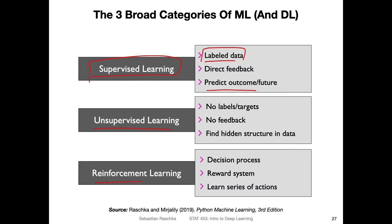Supervised learning also involves direct feedback. We can say whether our prediction was correct or not. You have an example of an email that is spam or not spam, the model does a prediction, and during evaluation, if you know the correct label, you have direct feedback during the training.